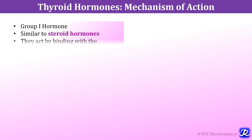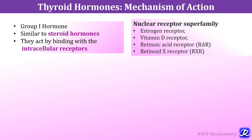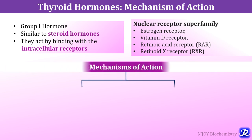Thyroid hormones are group 1 hormones and their action is similar to steroid hormones. They act by binding with intracellular receptors. Intracellular receptors belong to the nuclear receptor superfamily, which also includes estrogen receptor, vitamin D receptors, retinoic acid receptor and retinoid X receptor.